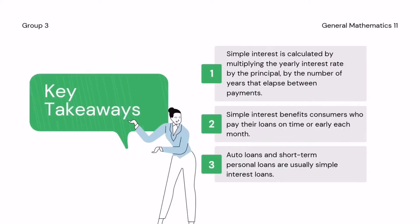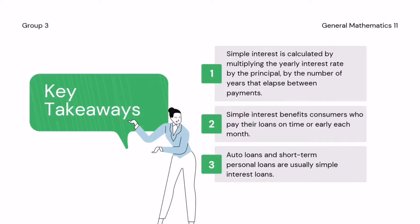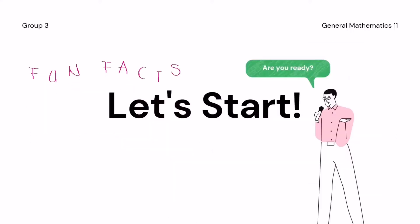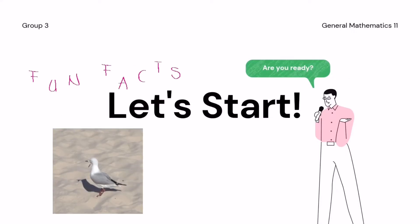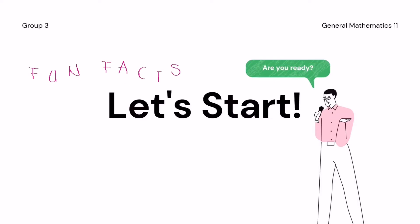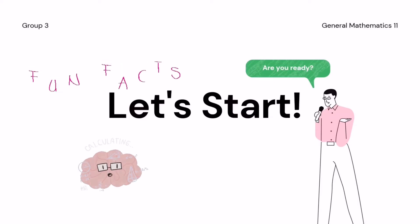Key takeaways: Simple interest is calculated by multiplying the yearly interest rate by the principal by the number of years that elapsed between payments. Simple interest benefits consumers who pay their loans on time or early each month. Auto loans and short-term personal loans are usually simple interest loans. Fun fact: interest is the cost of borrowing money, typically expressed as a percentage — a fee or extra charge the borrower pays the lender for the financed sum.